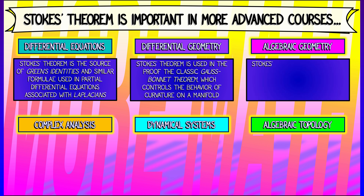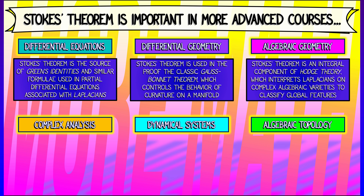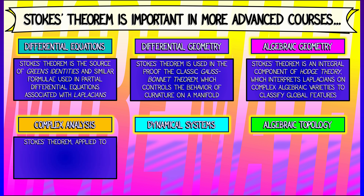If you really go far in mathematics, you might take some algebraic geometry, and Stokes' theorem is going to be a central component of Hodge theory, which uses Laplacians to classify global features in solutions to systems of complex polynomial equations.